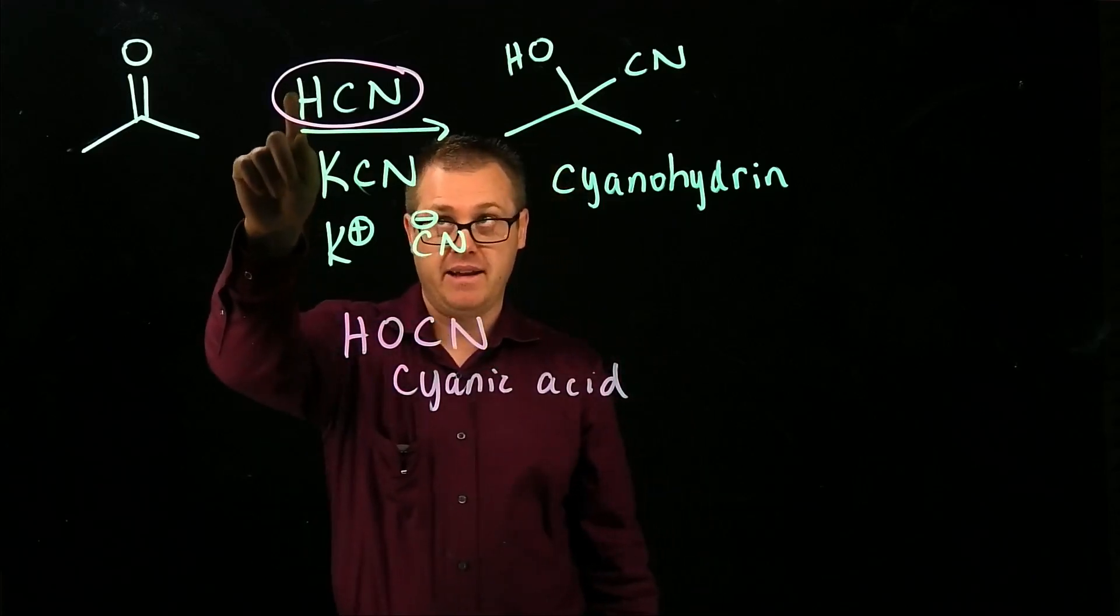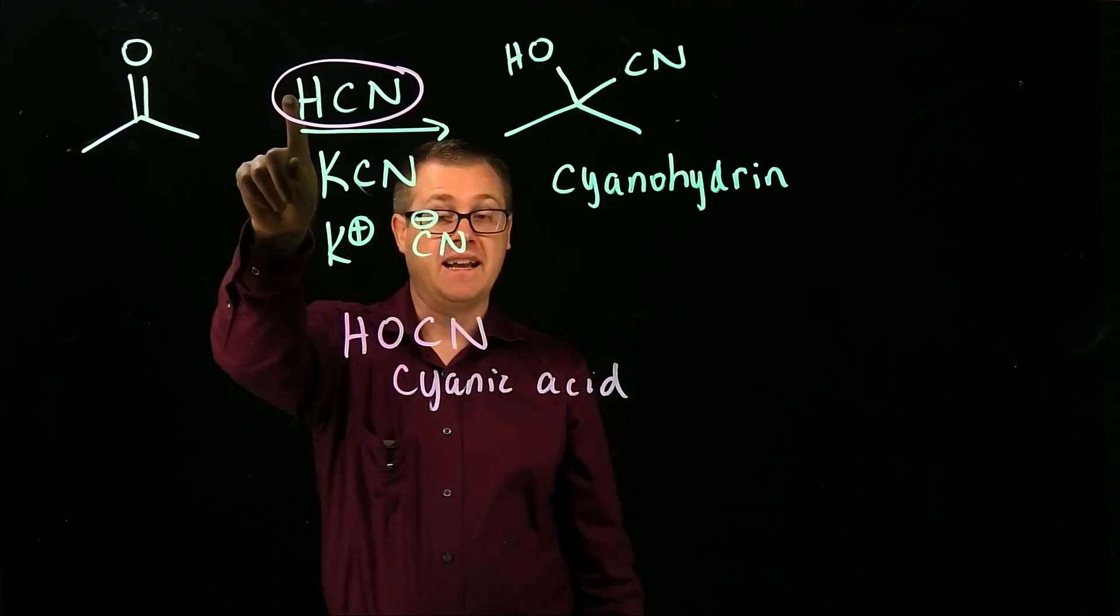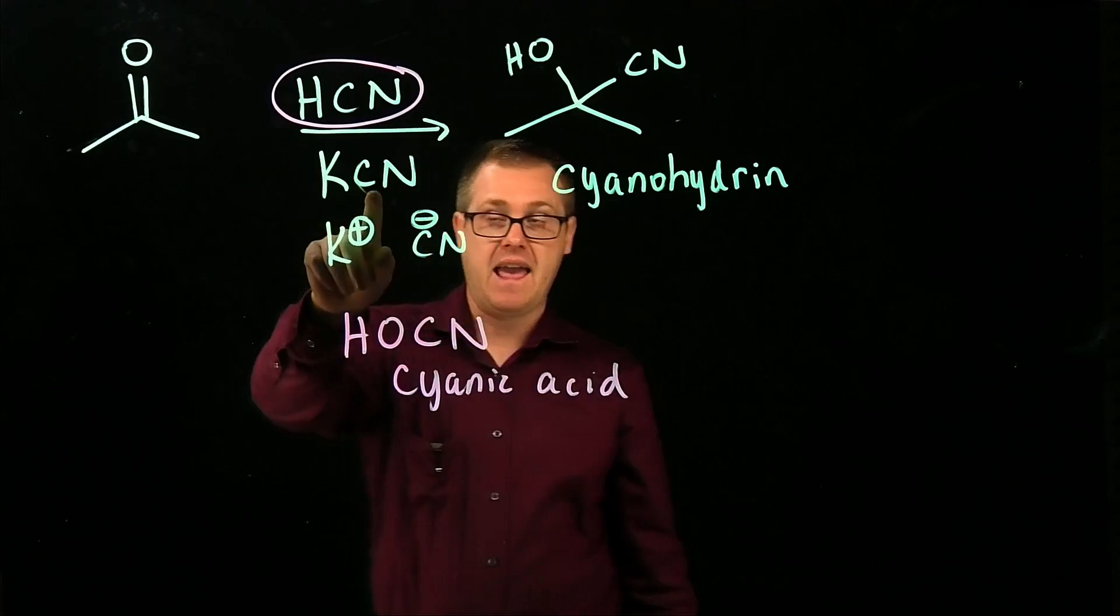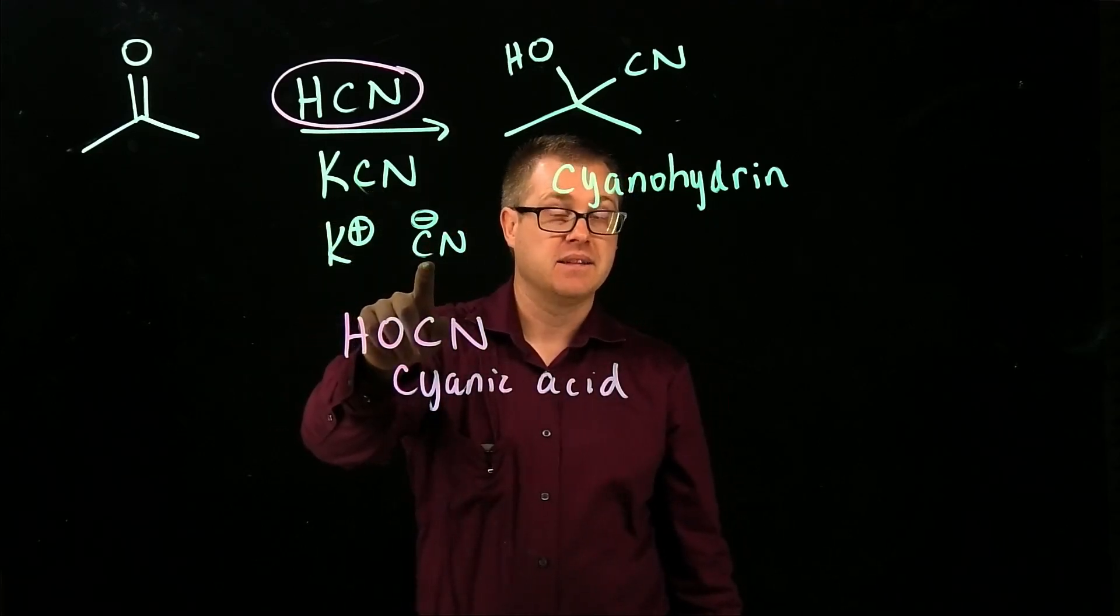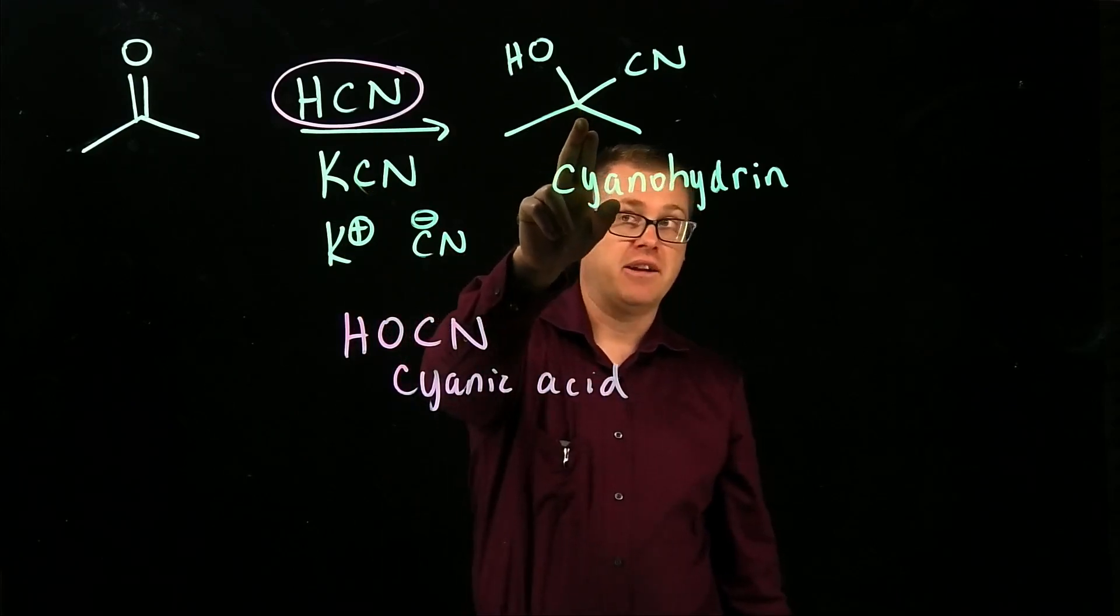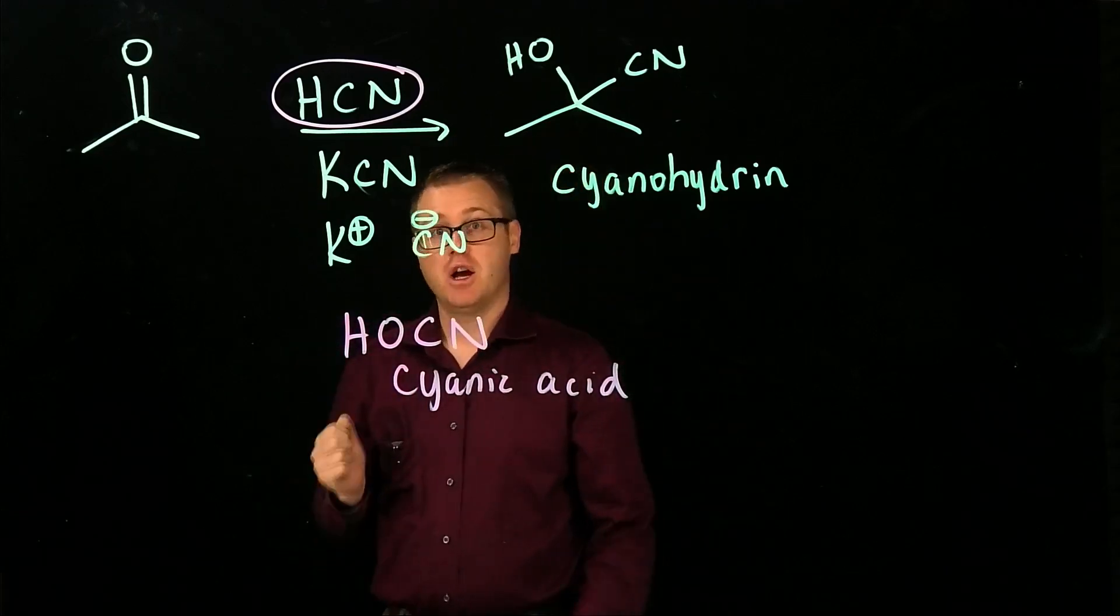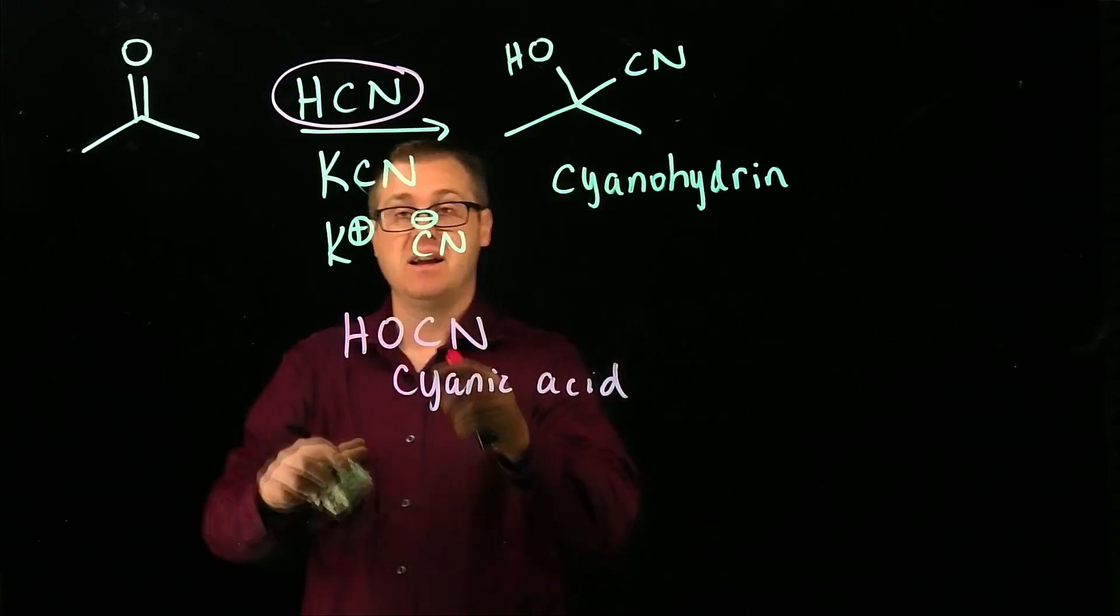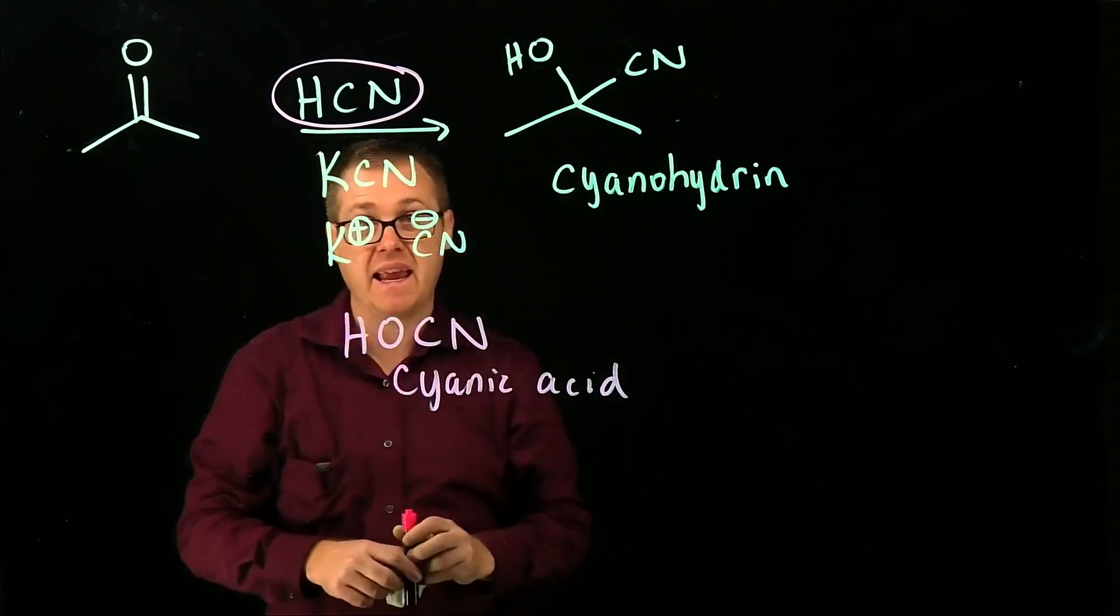So we have to treat the ketone or aldehyde with our hydrogen cyanide and potassium cyanide, which is going to act as our base, to give us our cyanohydrin. So this reaction works best under basic conditions. And that is why we're adding this species right here, to make it basic.